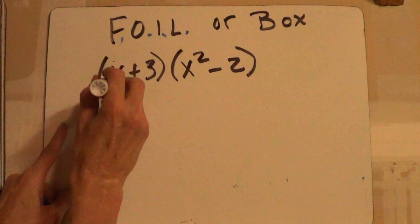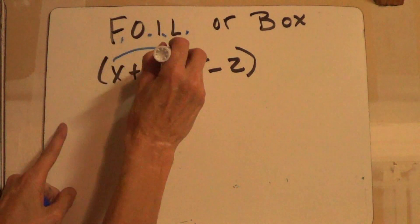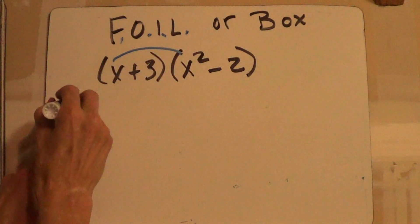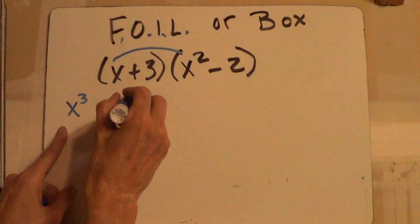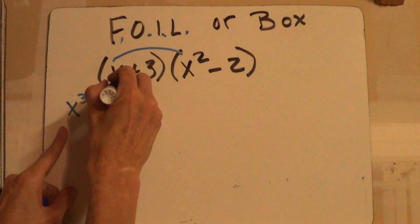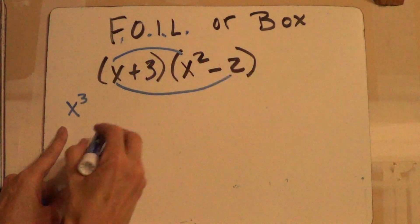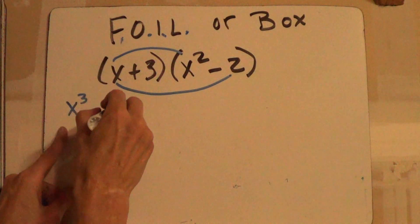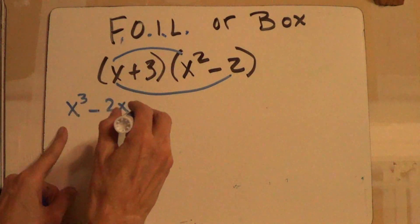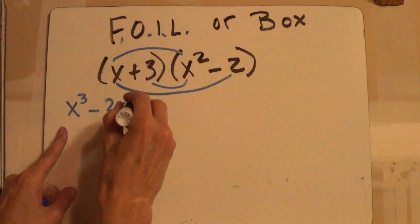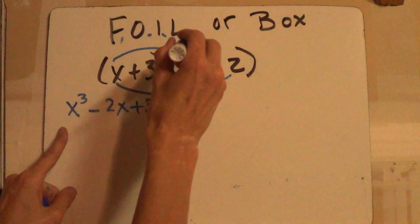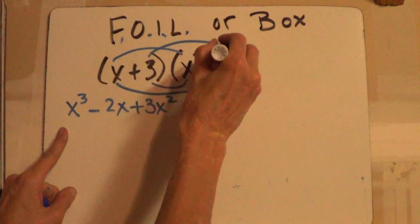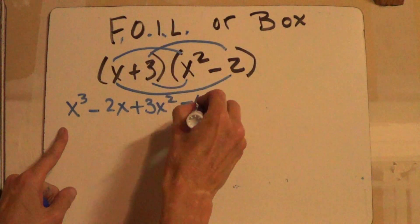And so if you do the first, I just draw little arrows to the first. That would be x cubed. That's your F. The O outside, negative 2x, I inside, plus 3x squared, you're just multiplying, and last, negative 6.